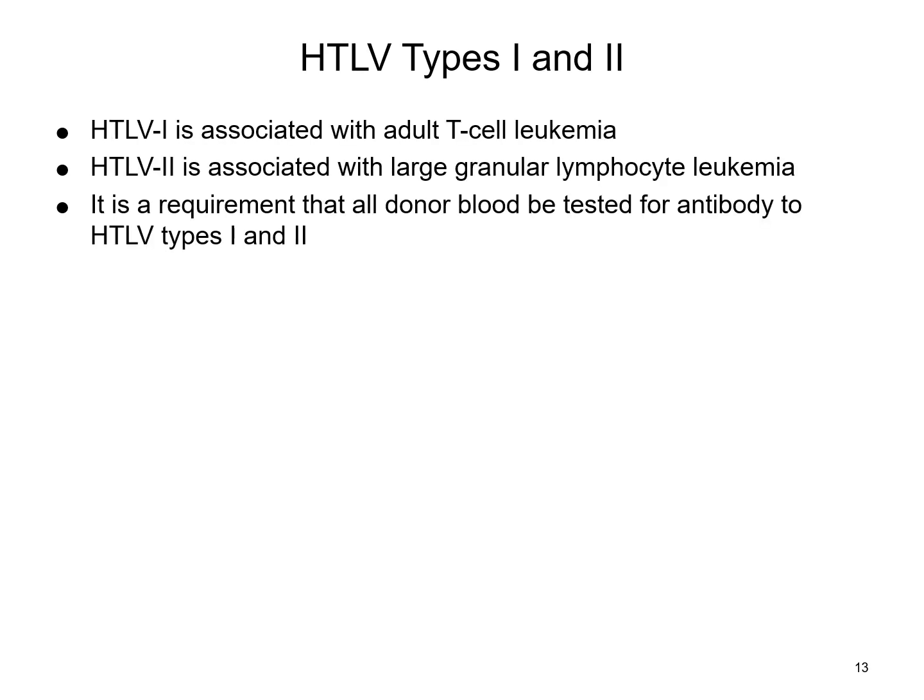HTLV type 1 is associated with T cell leukemia, and type 2 is associated with large granular lymphocytic leukemia. All donors are required to be screened for antibodies to these types. There have been reports of individuals who developed tropical spastic paraparesis following transfusions with HTLV type 1 infected donors, and reports of patients showing an atypical T cell variant of hairy cell leukemia after transfusion with HTLV type 2. Screening is very important to avoid adding complications to the recipient.